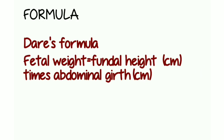So how do we calculate this? The formula we are going to use is known as the DARE's formula. In this formula, we use the fundal height as well as the abdominal girth — that is, the abdominal circumference — which are all measured in centimeters.